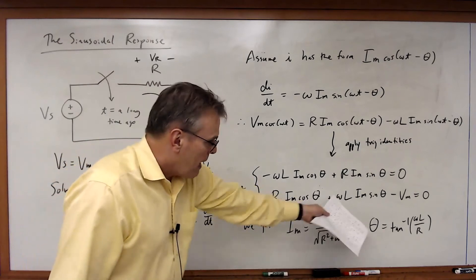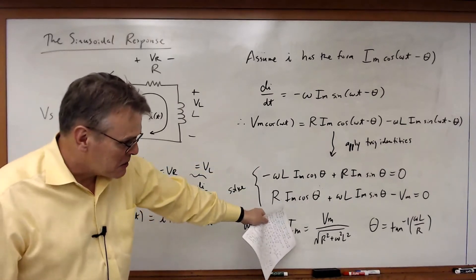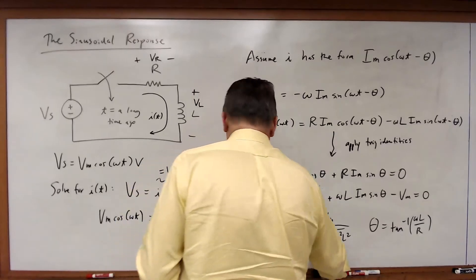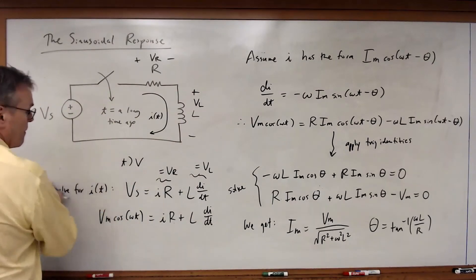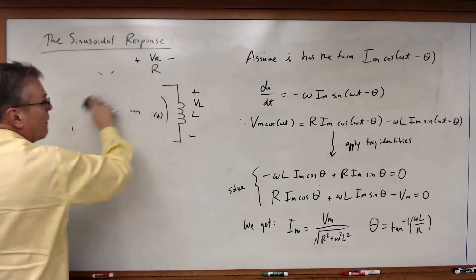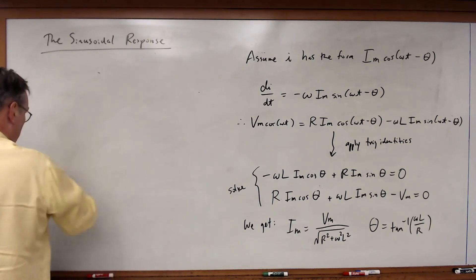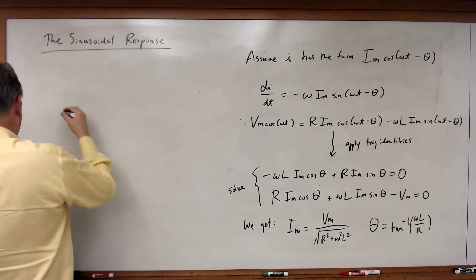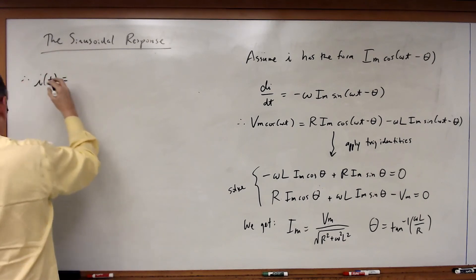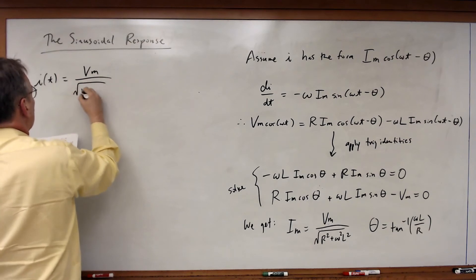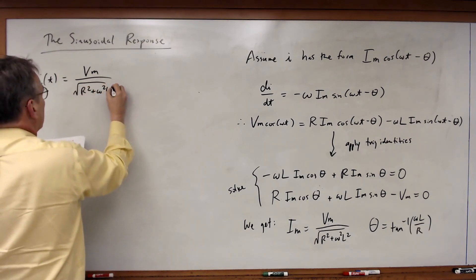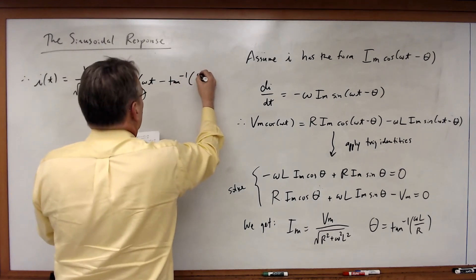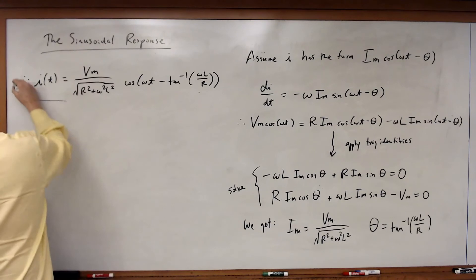And so therefore, after quite a bit of mathematical manipulation, we get to this point and we can plug it into our form of our solution. And what we will get is the following. That I of T will therefore be equal to V M divided by the square root of R squared plus omega squared L squared times cosine omega T minus the inverse tangent of omega L over R.